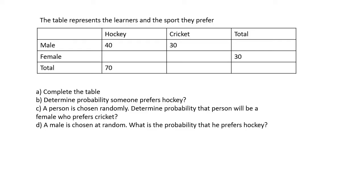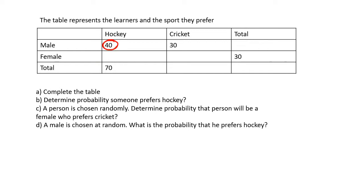So here we have a table that represents the learners and the sport that they prefer. We've got males and females, hockey and cricket. Now, for the hockey people, there is a total of 70 hockey players. We can already see that there are 40 male hockey players. So this number would have to be 30 — 40 male hockey players plus 30 females gives a total of 70 hockey players.